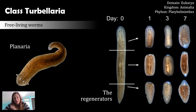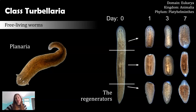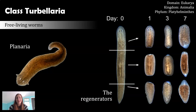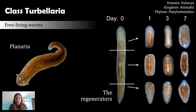You might understand why these get used more in science — because if we could figure out exactly how they regenerate, we could potentially apply that to humans. That research is pretty far away, but that's why Planarians are so interesting. They're very cheap, so you can do really cool research on a really cheap organism that one day might have huge implications for human health.